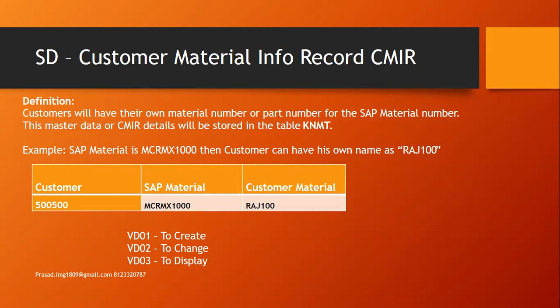Whatever customers are having, and whatever materials have been maintained for those customers as a customer material, we can extract that data from the table KNMT. In EDA terminologies, the majority of the time we use the term SAP part number, which is why I'm using it as SAP material or SAP part number.